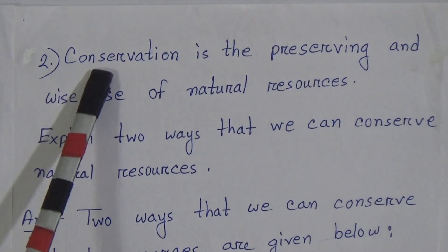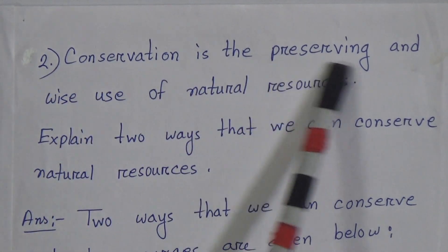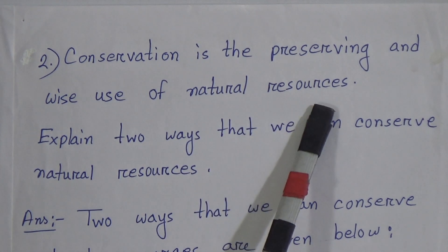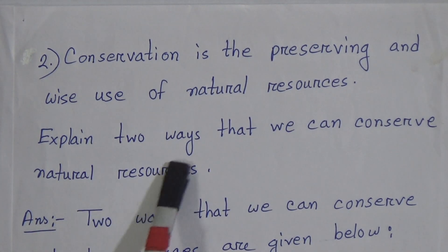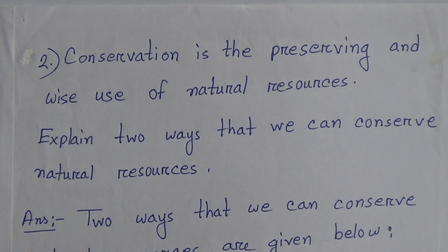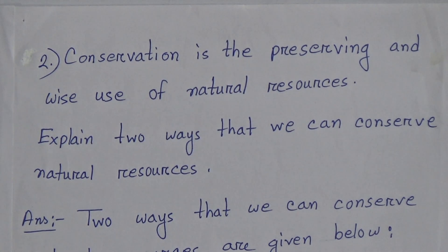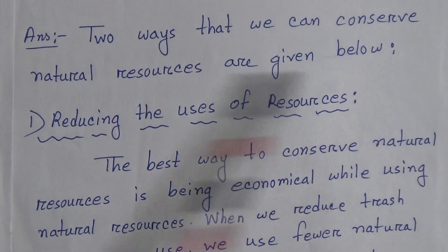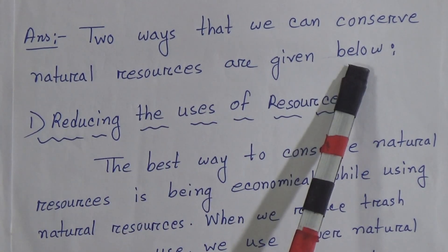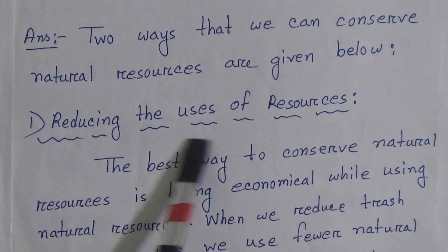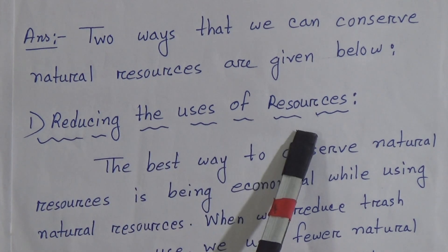Broad question number 2: Conservation is the preserving and wise use of natural resources. Explain two ways that we can conserve natural resources. Answer: Two ways that we can conserve natural resources are given below. Number one: Reducing the use of resources.